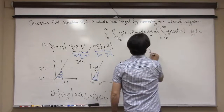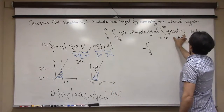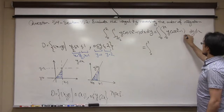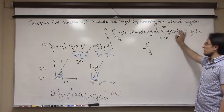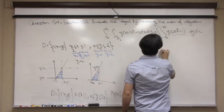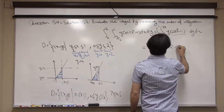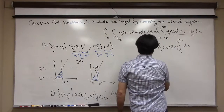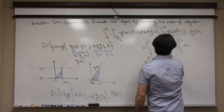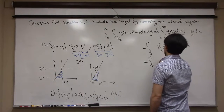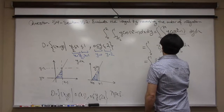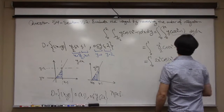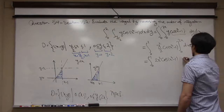To evaluate the iterated integral, do the inner one first. I integrate with respect to y — treating x as a constant. The antiderivative of y is y²/2, times cosine(x³ − 1). Plugging in 0 gives 0, and plugging in 2x gives (2x)²/2 = 2x², so the inner integral evaluates to 2x² cos(x³ − 1).